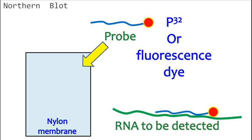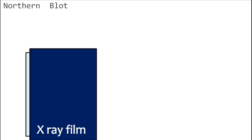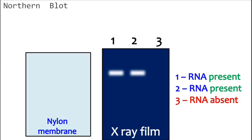If the desired RNA is present, then the probe binds and binding is confirmed by autoradiography. If the binding fails, no band on the autoradiogram is obtained.